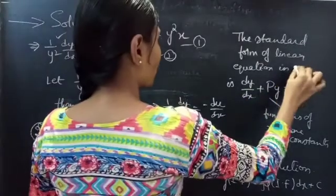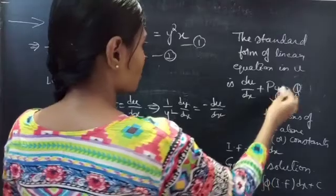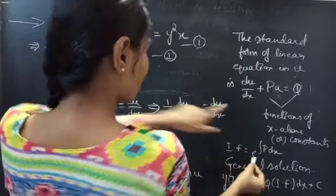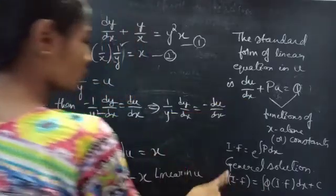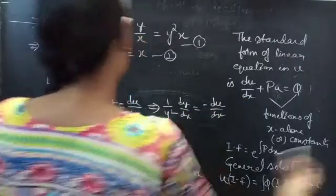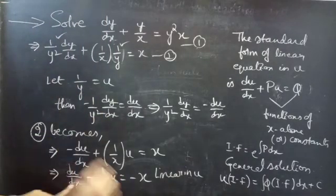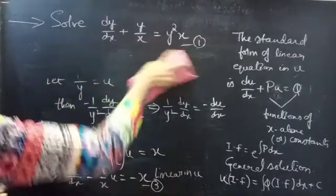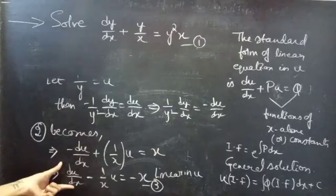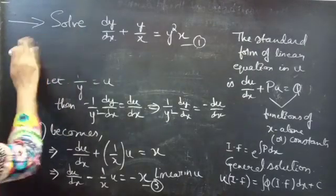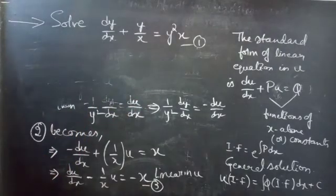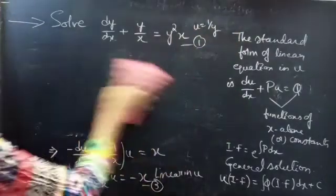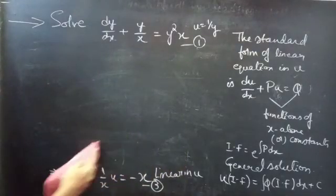We know that the standard form of a linear equation in u is du/dx plus P·u equals Q, where P and Q are functions of x alone or constants. The integrating factor is e^(∫P dx) and the general solution is u·(IF) equals ∫Q·(IF) dx plus C. We have now reduced the given Bernoulli's equation to a linear equation in u. Before finding the general solution, we identify P and Q.